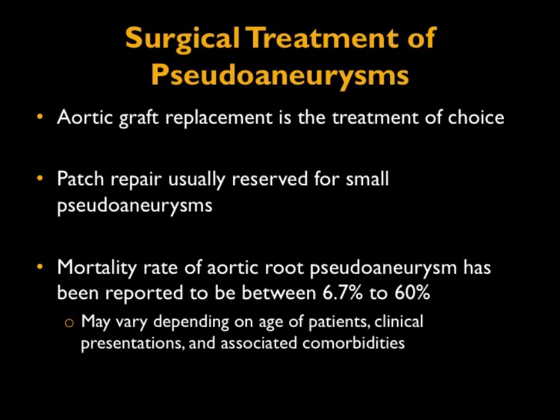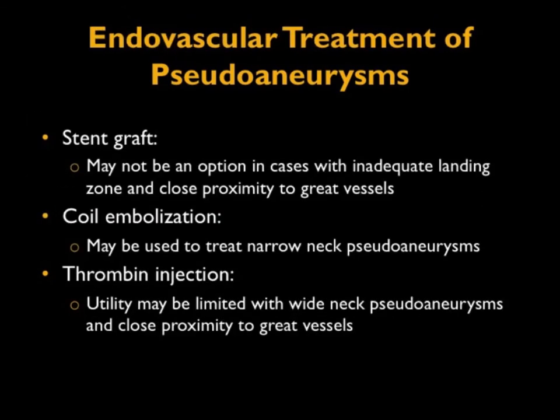In terms of treatment, it's surgery. Aortic root replacement is the treatment of choice; patch repairs are usually reserved for small pseudoaneurysms. The mortality rate of pseudoaneurysms is up to 60%, varying with the patient's comorbidities and presentation — an acute presentation with a leaking pseudoaneurysm carries very high mortality. Most patients can do well if it's picked up incidentally or when small, and they have few comorbidities. Regarding endovascular treatment, stent grafts may not be an option given proximity to great vessels, and coil embolization is rarely used.